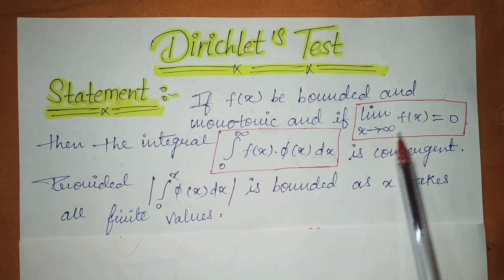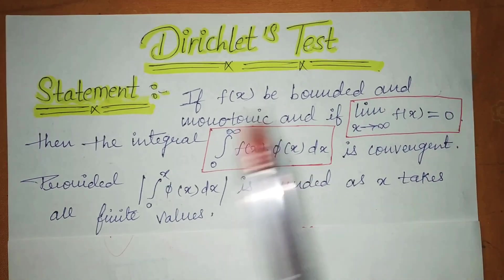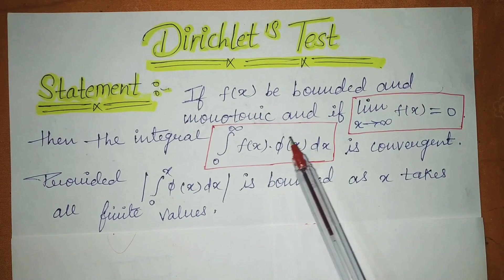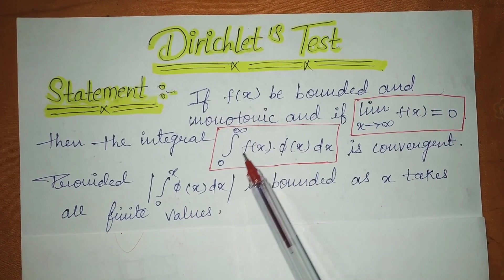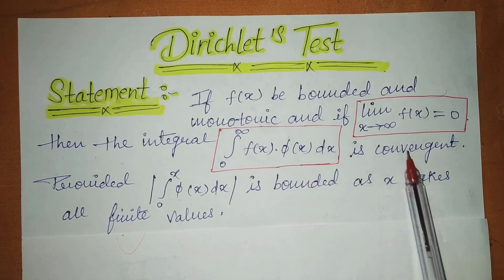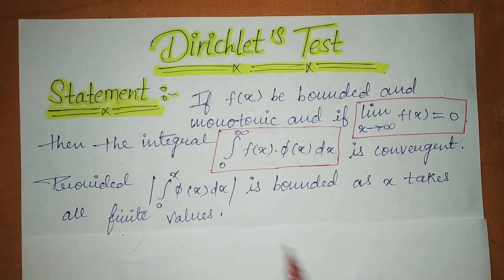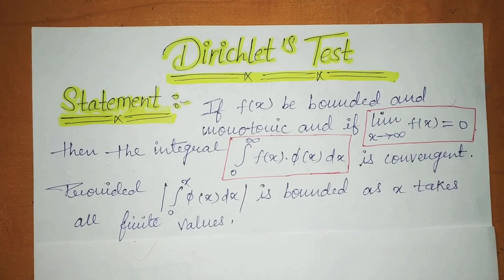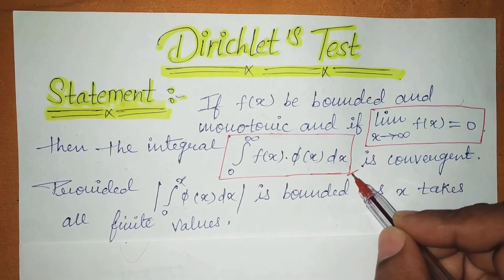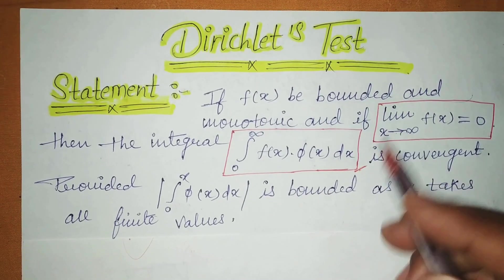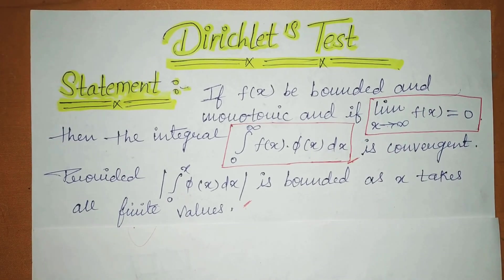The second condition is: limit as x tends to infinity of fx equals 0. If both conditions are fulfilled — bounded and monotonic, and the limit equals 0 — then the integral from 0 to infinity of fx is convergent, provided the integral is bounded as x takes all finite values.